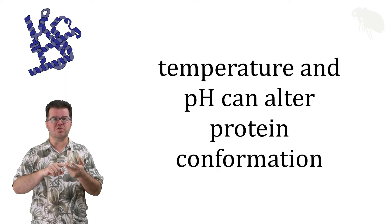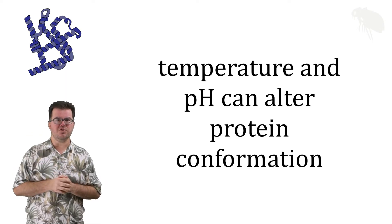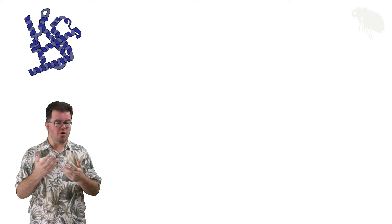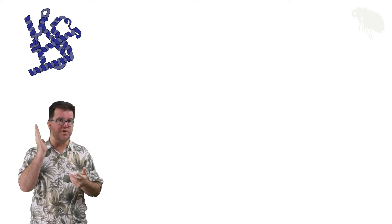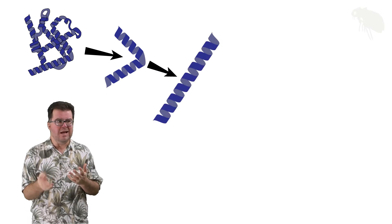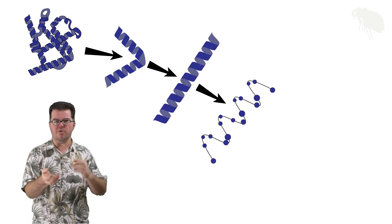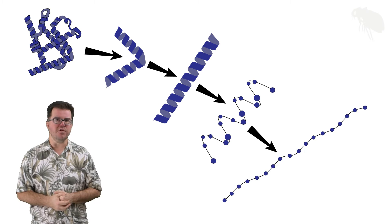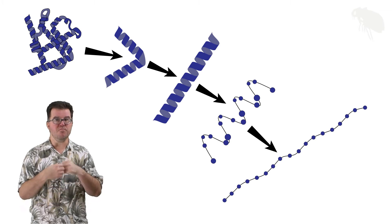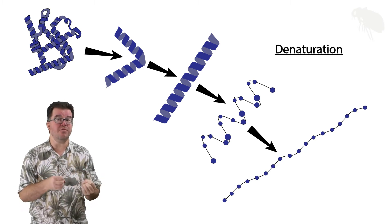Consider temperature and pH, and consider this tertiary structure of beta hemoglobin. If I alter the temperature or pH around this protein enough, we begin to see the tertiary structure unfold, and then the secondary structure unfolds, and then we're left with an unfolded primary structure. We've completely unfolded or denatured the protein.